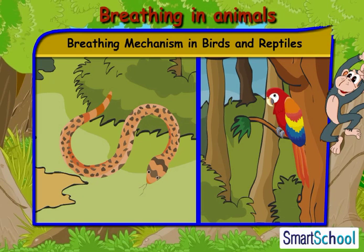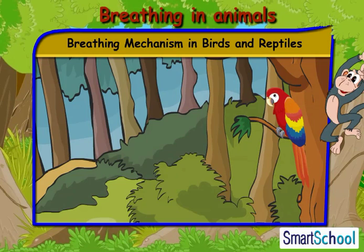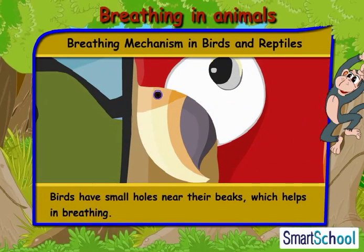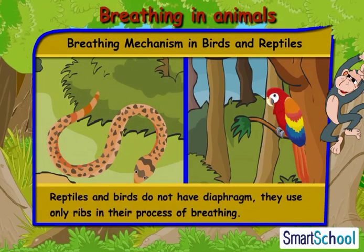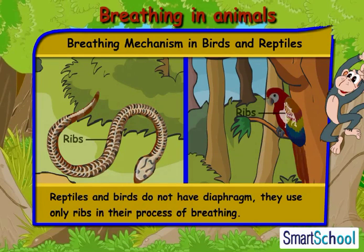Now let us see the breathing process in birds and reptiles. Birds have small holes near their beaks which help in breathing. Reptiles and birds do not have a diaphragm; they only use ribs in their process of breathing.